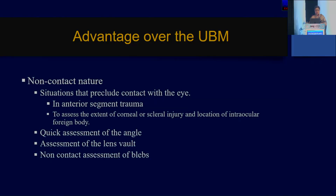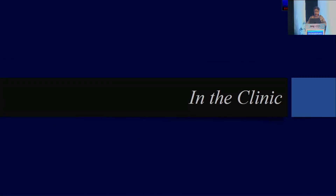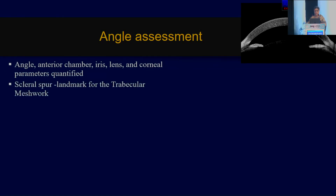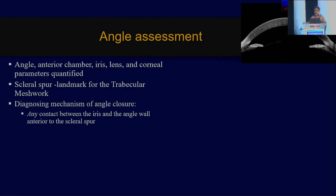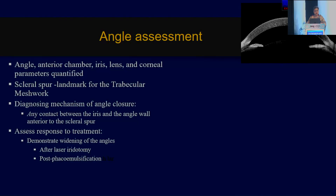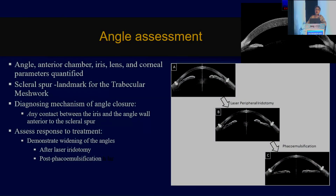The obvious advantage is that it's non-contact, which is useful in situations that preclude contact with the eye — such as anterior segment trauma — to assess the extent of corneal or scleral injury. You can do angle, anterior chamber, and corneal parameters if you want to quantify them. If you're doing research or a thesis and want to measure, the ASOCT is of immense use. Remember, it's not independent of the operator — the definition of the scleral spur is the most important thing. Only with an accurate depiction of the scleral spur will the ASOCT give you quantifiable images.